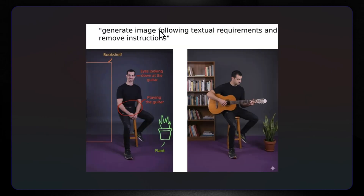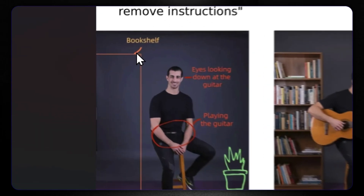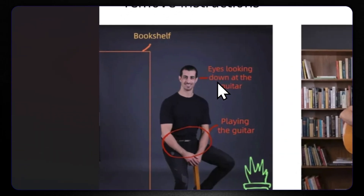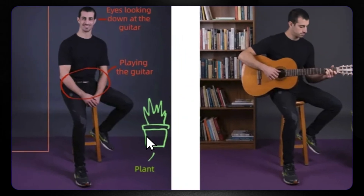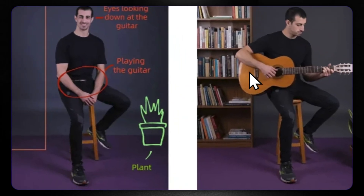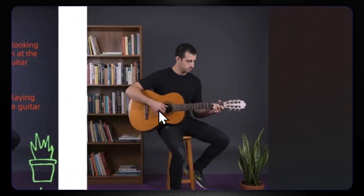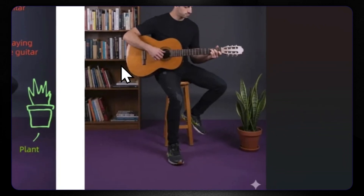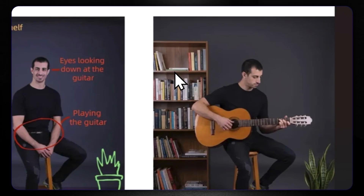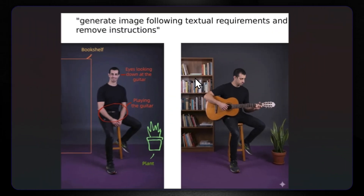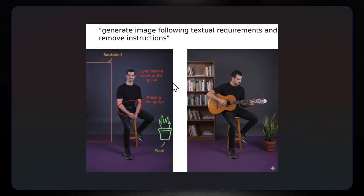Then we generate an image following textual requirements and remove instructions. We need to add a bookshelf, eyes looking down at the guitar, playing the guitar, and a plant. We receive this image — the person is really playing a guitar, looking down, the plant is here, and the armor is here too. It completely follows the instructions.